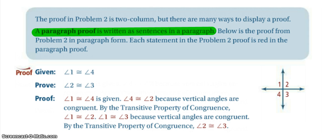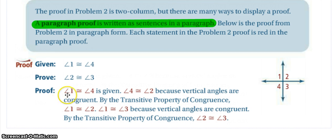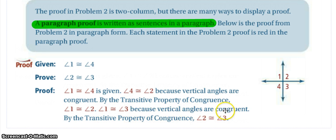Some people like a paragraph proof better. All a paragraph proof does is take your two-column proof and combine every statement with its coordinating reason. Going back to our problem where angle one is congruent to angle four is given and we're proving angle two is congruent to angle three: a paragraph proof makes the statement and then gives the reason right after. So: angle one is congruent to angle four — given. Angle four is congruent to angle two because vertical angles are congruent. By the transitive property of congruence, angle one is congruent to angle two. Angle one is congruent to angle three because vertical angles are congruent. By the transitive property of congruence, angle two is congruent to angle three. Same basic proof, just written in paragraph form as opposed to two-column form.